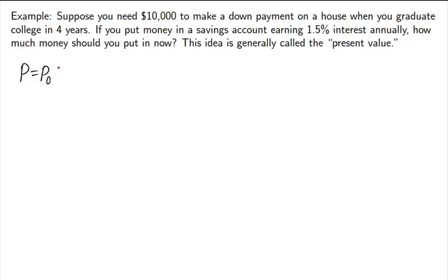We get P equals P0 times 1 plus r to the t. And now we're told the $10,000 is what we want in the future. So, I'm going to put that in for P, the future value. P0 is what I don't know. That's what I need to put in now. Then, r is my interest rate, .015. And t is 4 years.